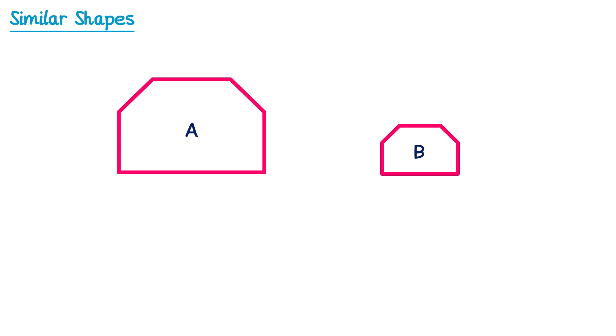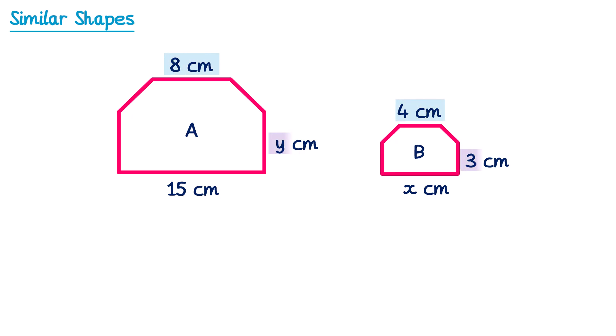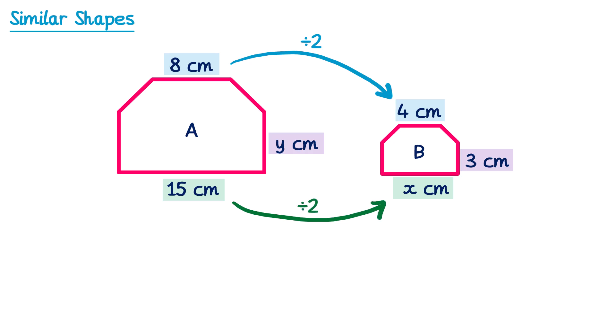Let's try another question. We have two shapes A and B with these dimensions. On the top we have an 8 and 4, on the right-hand side a Y and a 3, and on the bottom a 15 and an X. The only pair where we have both values is the 8 and 4. To get from 8 to 4 you divide by 2 — it's been halved. So to get from 15 to X I must also divide by 2: 15 divided by 2 is 7.5.